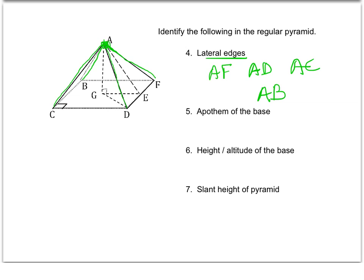Then we come to a familiar term: the apothem of the base. Whenever we're using pyramids, we'll probably be talking about the apothem. Looking at the base, which is a square, the apothem goes from the center point out to the middle of one of the base edges — not to the vertex, but to the middle. So the apothem of the base is GE. We're going to have to use that to calculate some surface area problems.